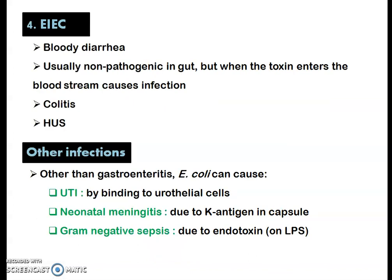The last type is enteroinvasive E. coli (EIEC), which also causes bloody diarrhea. Both EHEC and EIEC cause bloody diarrhea and hemolytic uremic syndrome. EIEC is usually non-pathogenic in the gut, but when the toxin enters the bloodstream it causes infection. Another complication caused by EIEC is colitis — inflammation of the colon region of the intestine.